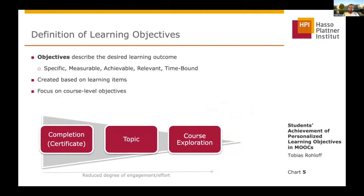We focused on course-level objectives and implemented three types of objectives with a varying degree of engagement and effort required. The first type is a completion type, which typically includes the certificates of the course. Then we have topic type objectives which include usually a subset of the items of a course, like a subtopic or an advanced and beginner track. And we have a course exploration objective, which is usually used to enable curious learners to take a look into the course and get an idea of the content.